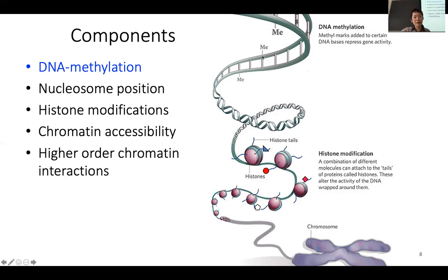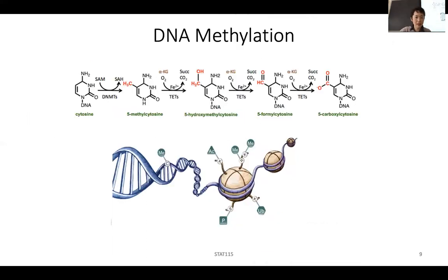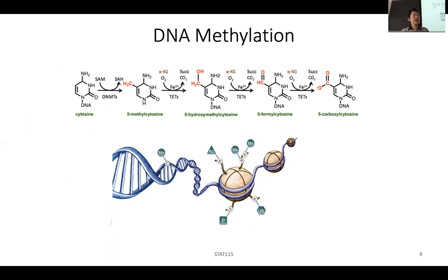DNA methylation really just happens at the DNA location. In the human genome, most DNA methylation happens on C. In bacterial genomes it can happen on other nucleotides as well, but in humans it's mostly on C, especially on a C that's followed by a G. In stem cells it can occasionally be followed by something else, but in most adult cells it's C followed by G that is very often methylated.